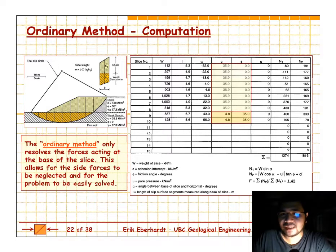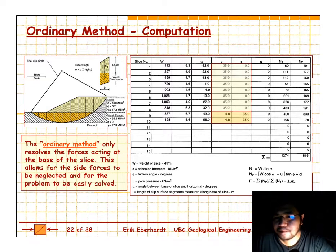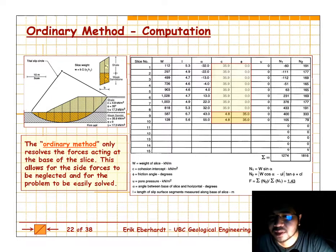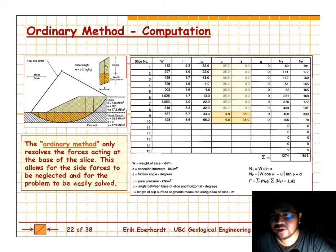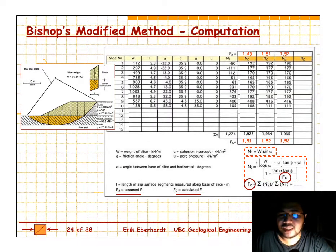An ordinary method calculation can easily be done in a spreadsheet — you calculate the weight, length, angle between base and slice, friction angle, and pore pressure, then calculate the driving force (N1) and resisting force (N2), yielding a factor of safety of 1.43 in this example. Bishop's method can also be done in a spreadsheet.